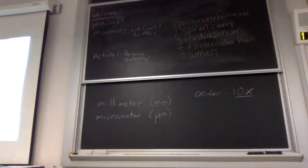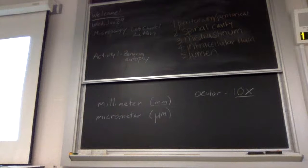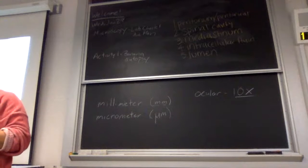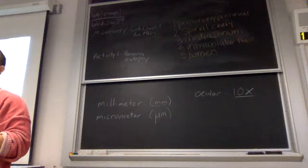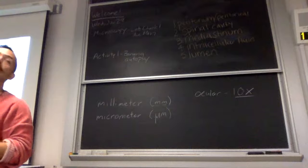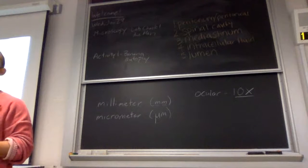Not everyone's eyes are the same width, so you can change the width of them just by twisting them back and forth, kind of like binoculars. For some of you, you might notice that in one of the lenses there's going to be this little black line. That's within the lens or next to the lens. It's meant as a pointer, so if we want to refer to something, that's one way to point to something.